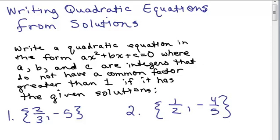In this video, we're going to learn how to write a quadratic equation in the form ax squared plus bx plus c equals 0. And we're also going to put the stipulation that a, b, and c are going to be integers that don't have a common factor greater than 1.